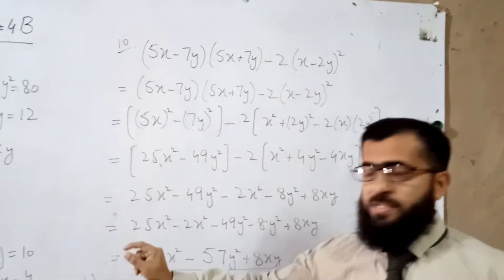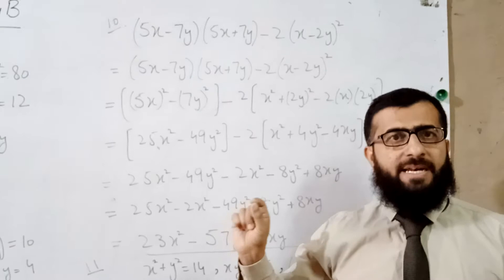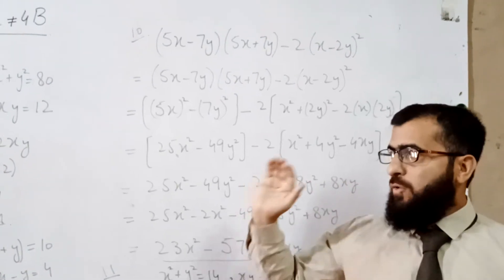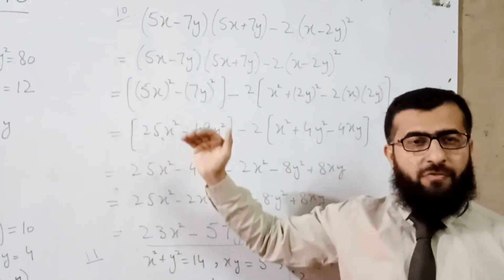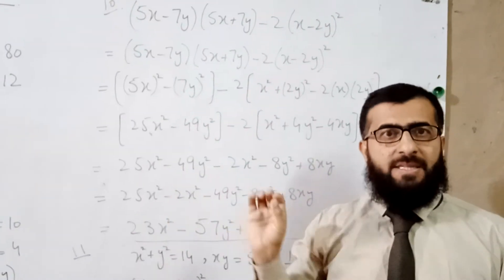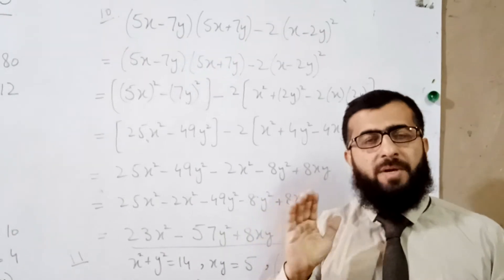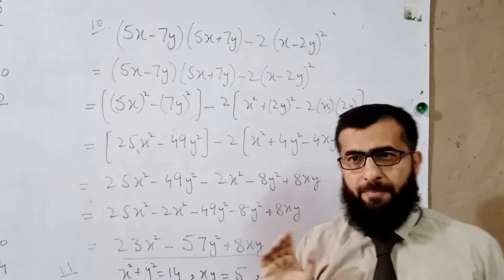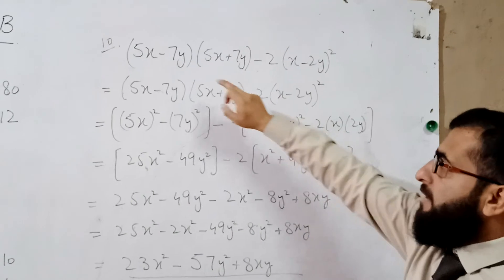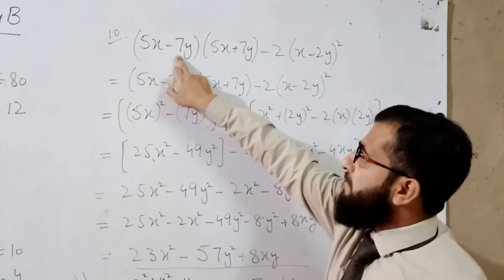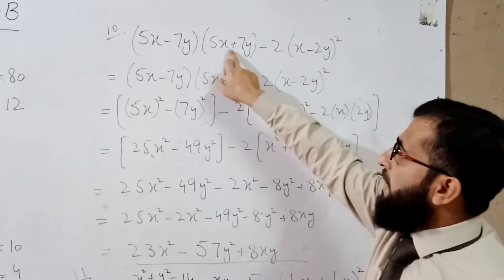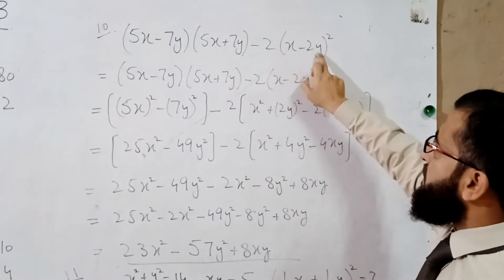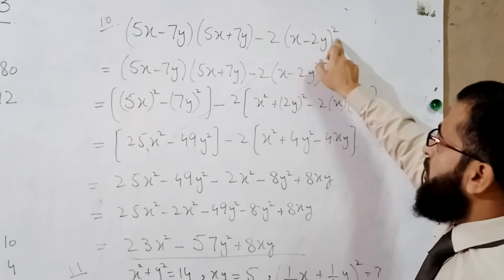Question numbers 7, 8, and 9 follow the same approach as questions 4, 5, and 6 — identify the three values and apply the appropriate formula. Question 10: expand (5x − 7y)(5x + 7y) − 2(x − 2y)².